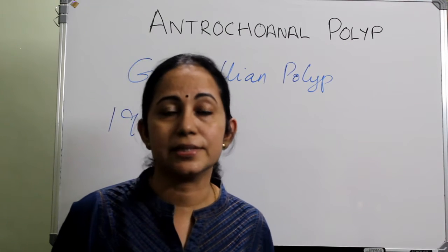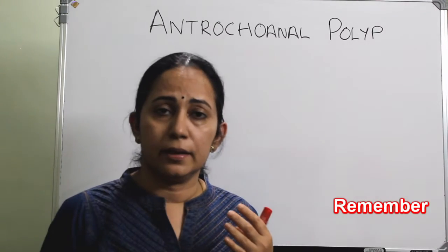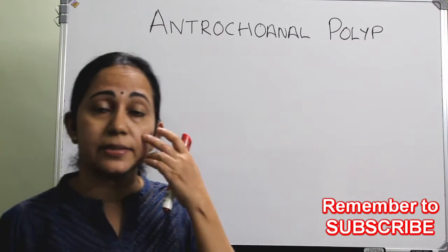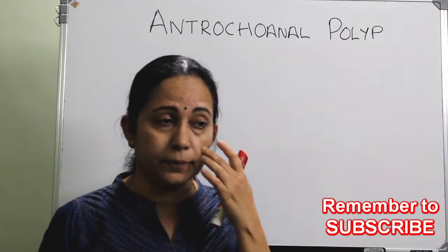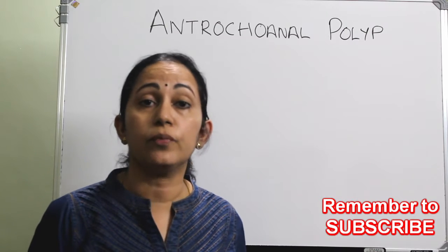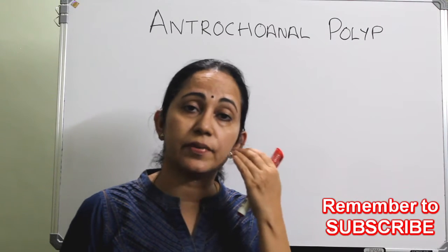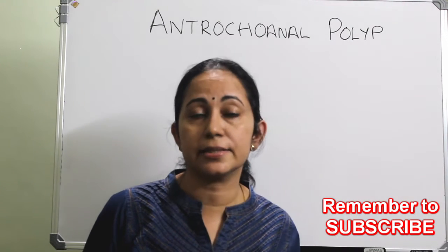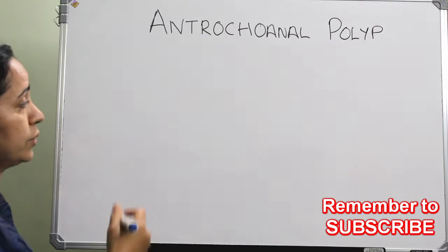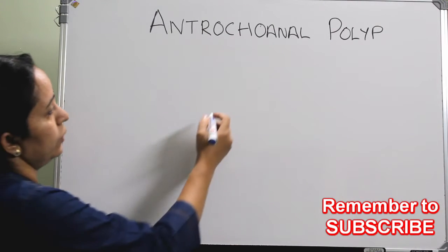It is more commonly seen in males compared to females. This antrochoanal polyp, as the name suggests, arises from the antrum. The maxillary antrum is otherwise called the antrum of Highmore. So this arises from the maxillary sinus and it goes to the choana.